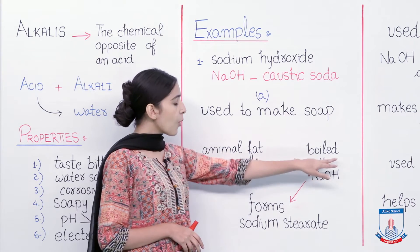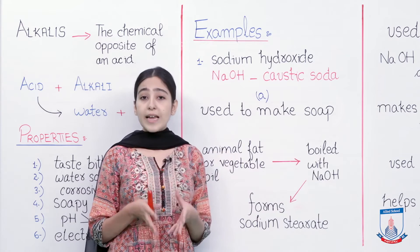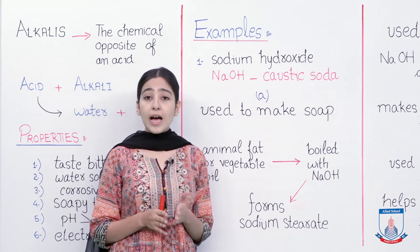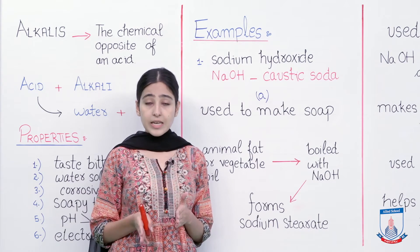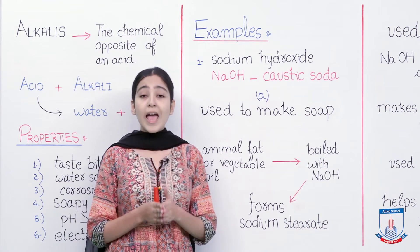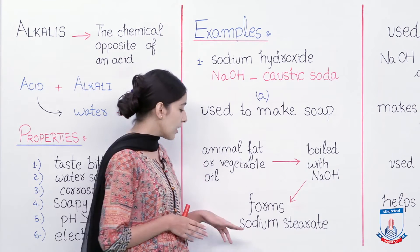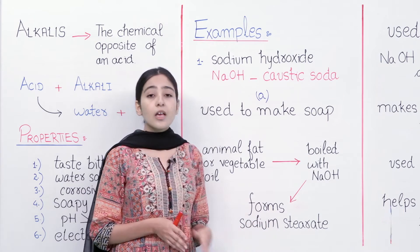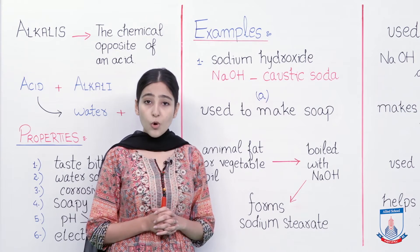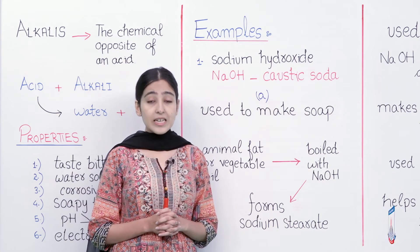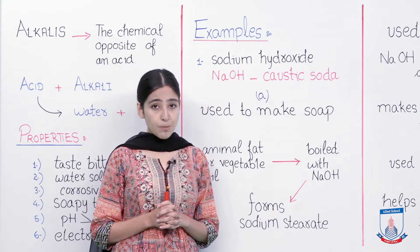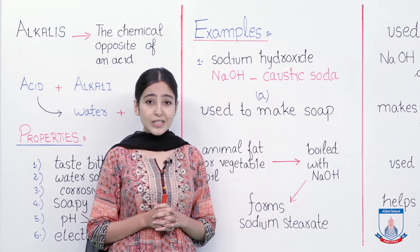Animal fat or vegetable oil is boiled with NaOH. The fat obtained from any source — either from animals or from plants — is boiled with sodium hydroxide solution, and as a result we get sodium citrate. Sodium citrate is the most important and basic ingredient of soap. Since alkalis have a soapy texture, they are mostly used for cleaning purposes.